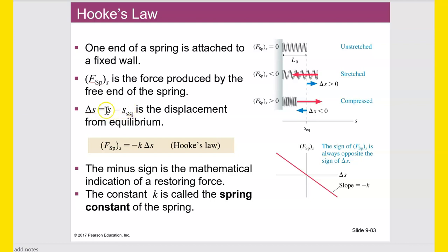S itself is the position of the spring at any point in the problem. So if S-eq is 3 and we stretch the spring 2 inches, then S would be 5 and delta S would be 2 inches. If it's compressed, S may be 1, and then 1 minus 3 gives negative 2. Hooke's Law, which we encountered in Calculus 2, states that the force of the spring in the S direction equals negative K times delta S. K is the spring constant unique to each spring — how rigid or flexible the spring is.